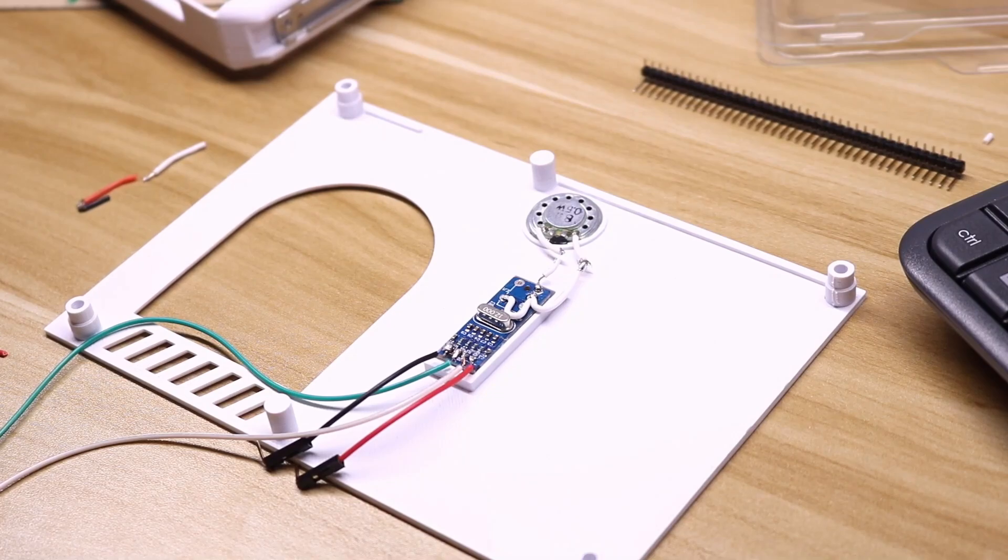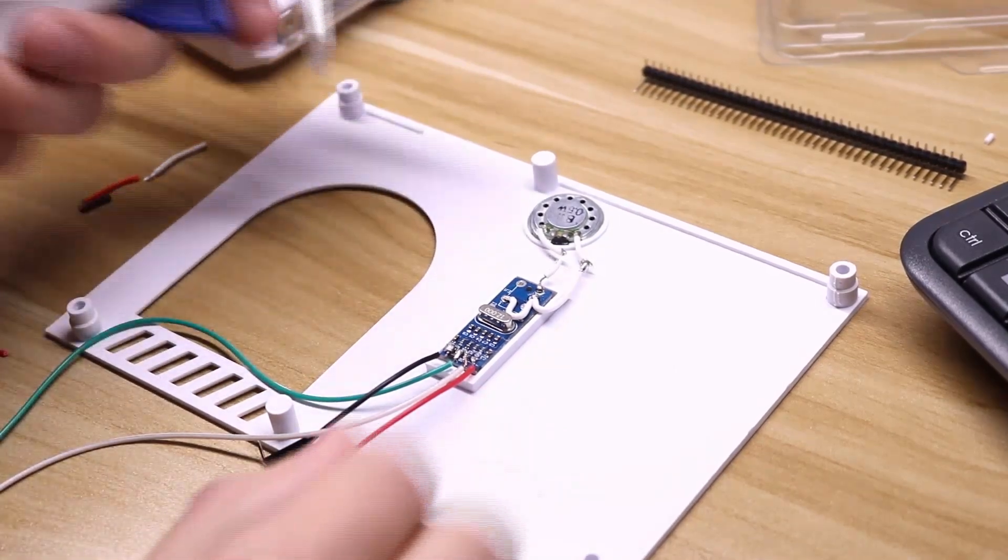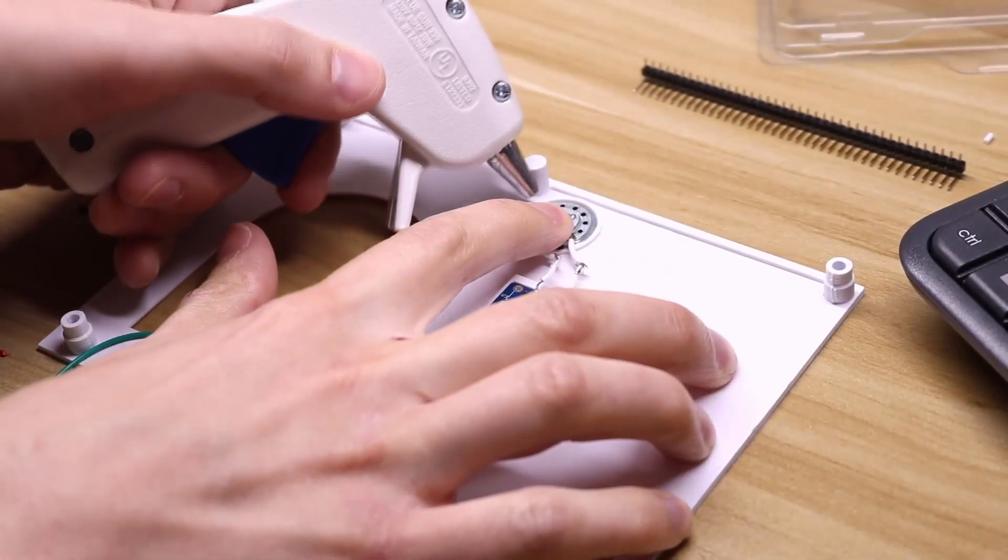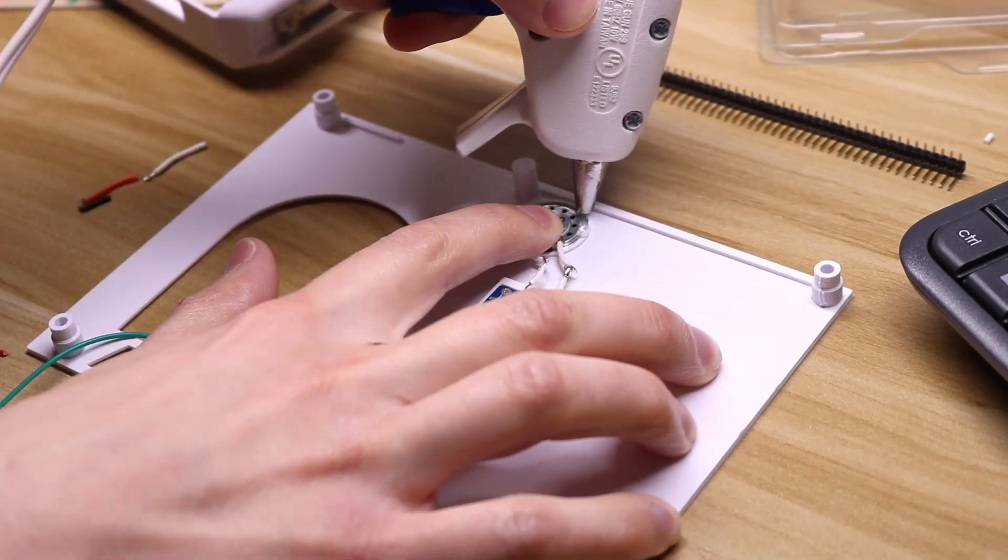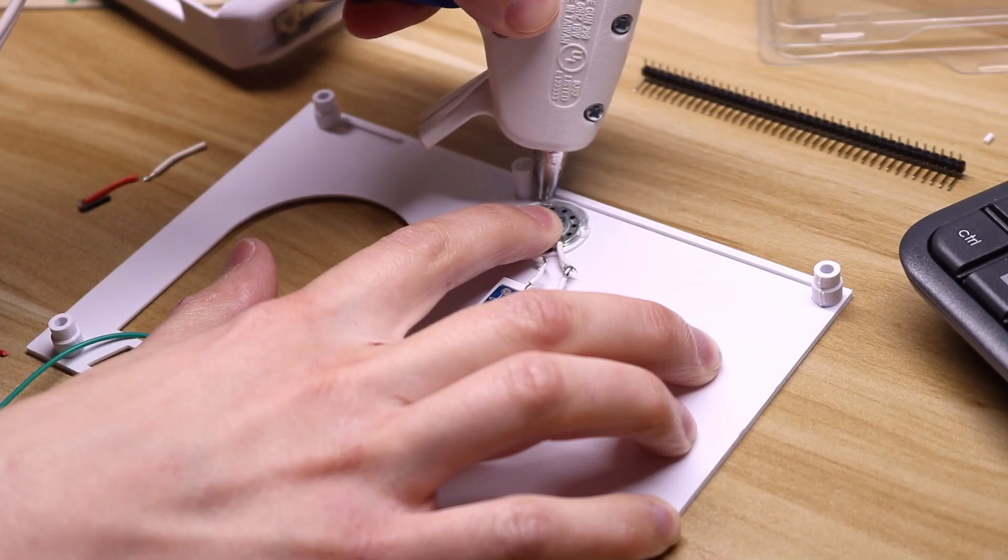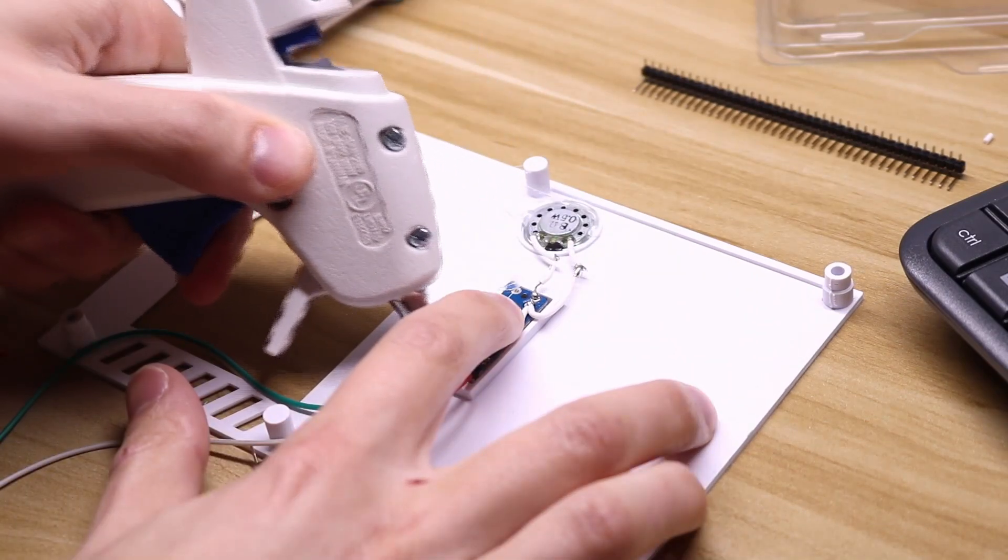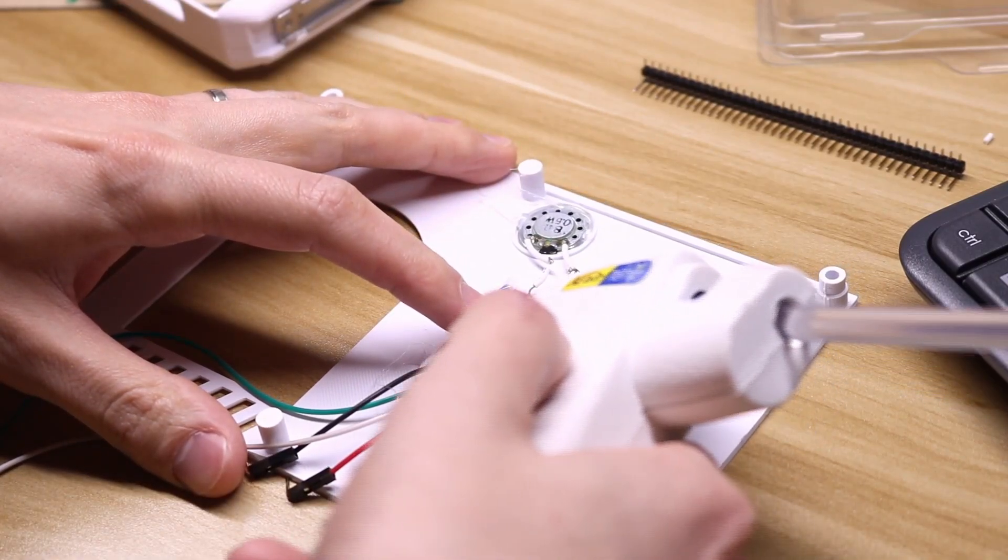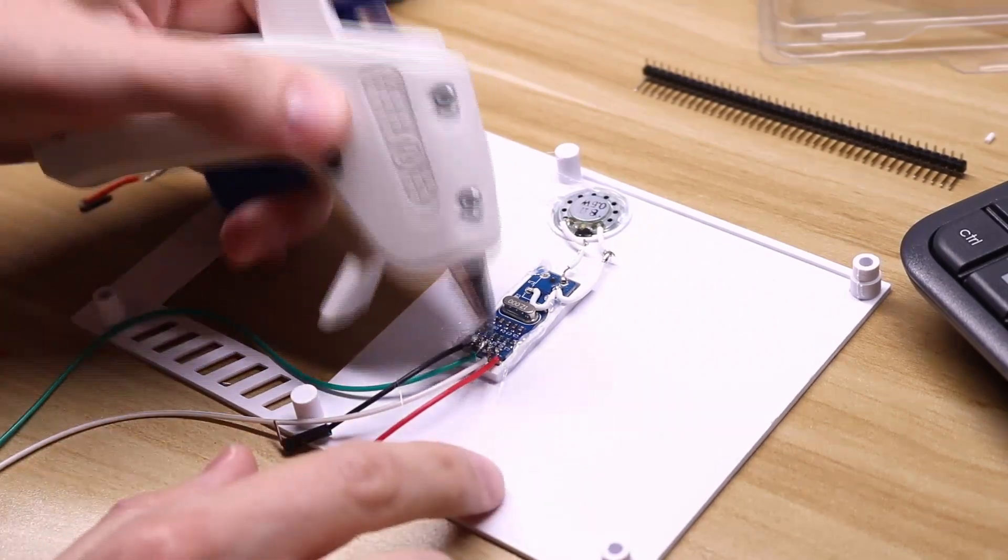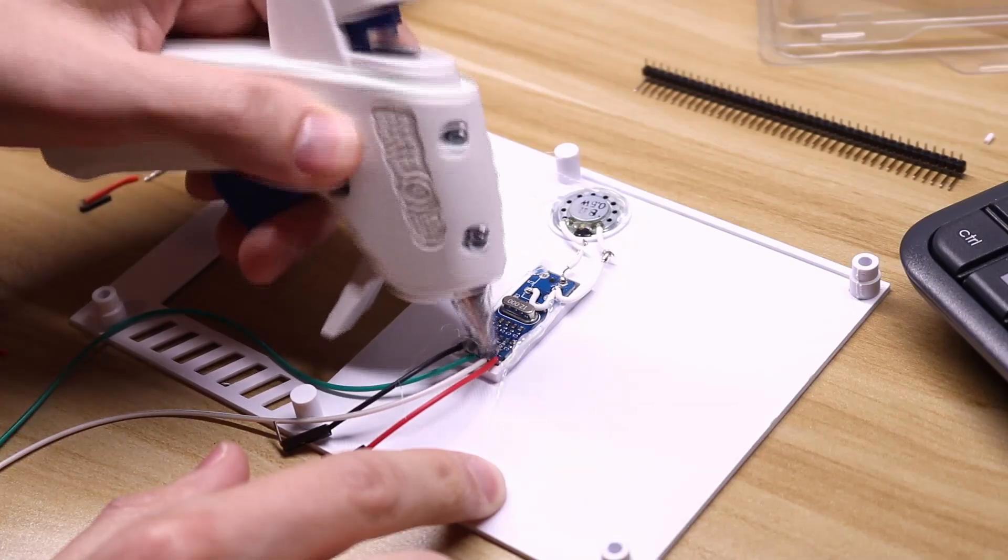Now that we have everything wired up, we're going to secure this to the lid. Let's look at your speaker, your sound card, and a hot glue gun, and we're going to carefully secure this to the lid. I'm also going to use the hot glue to give some support to these wires here because they are a little fragile.